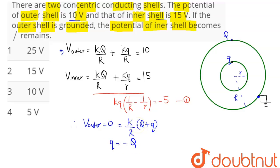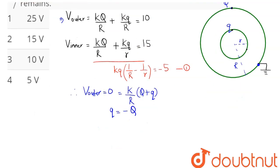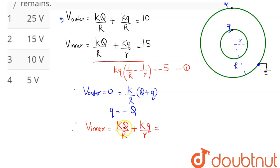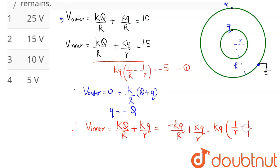The new potential on the inner shell is K·Q/R + K·q/r. Substituting Q = −q, this becomes −K·q/R + K·q/r, and taking K·q common gives K·q·(1/r − 1/R). From equation 1, this value equals 5. Hence the potential of the inner shell is 5 volts, which is option number 4.